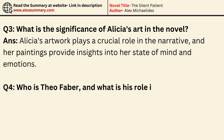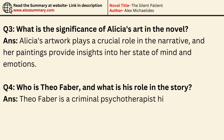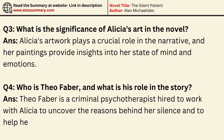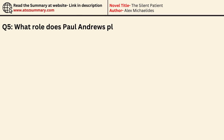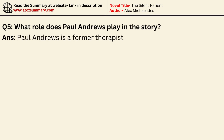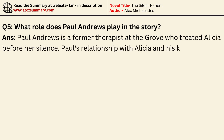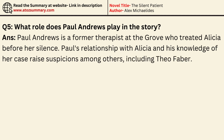Who is Theo Faber and what is his role in the story? Theo Faber is a criminal psychotherapist hired to work with Alicia to uncover the reasons behind her silence and to help her regain her voice. What role does Paul Andrews play in the story? Paul Andrews is a former therapist at The Grove who treated Alicia before her silence. Paul's relationship with Alicia and his knowledge of her case raise suspicions, including from Theo Faber.